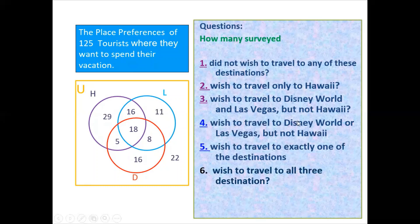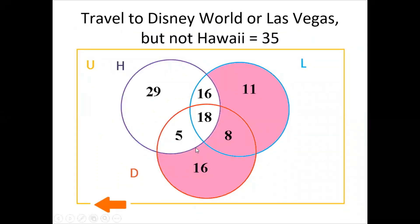Question 4: How many wish to travel to Disney World or Las Vegas but not Hawaii? This seems similar to question 3, but notice question 3 uses 'and' (intersection) while question 4 uses 'or' (union). So we take the union of Disney and Las Vegas but not Hawaii: 19 plus 16 equals 35.